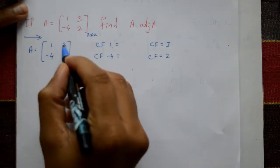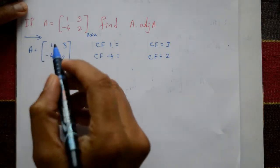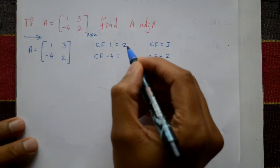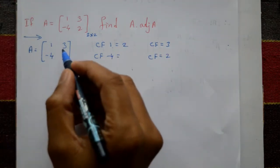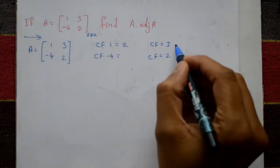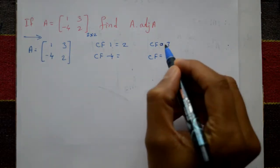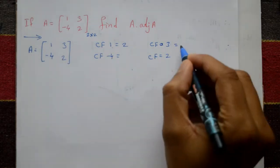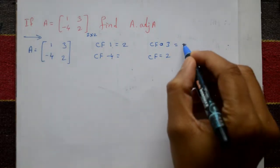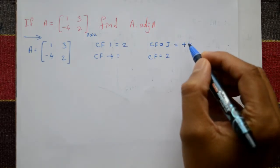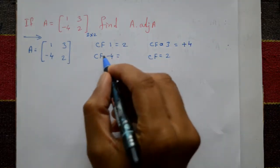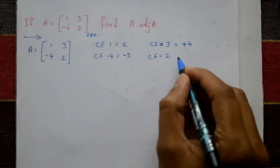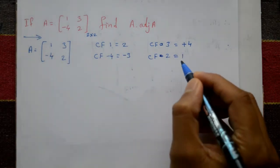The matrix A is given as [1, 3; -4, 2]. Now, the cofactor of 1 is 2. The cofactor of 3 equals minus sign times this element, minus times minus gives plus, so it's 4. The cofactor of -4 is -3. The cofactor of 2 is 1.